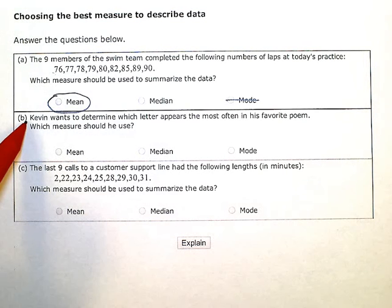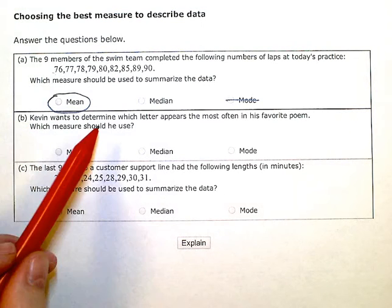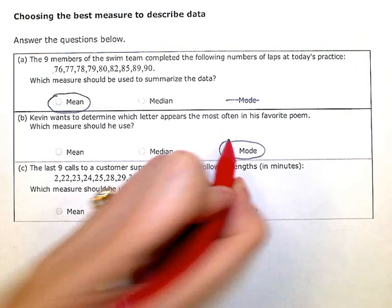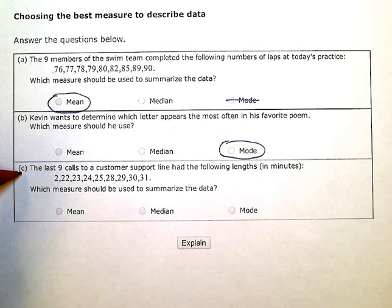Okay, this next one. Kevin wants to determine which letter appears the most often in his favorite poem. Which measure should he use? Well, the most occurring is the mode.